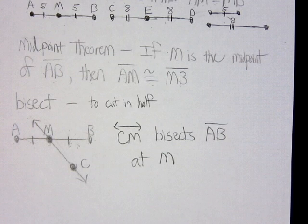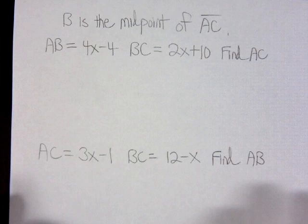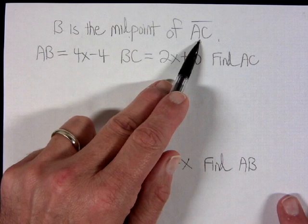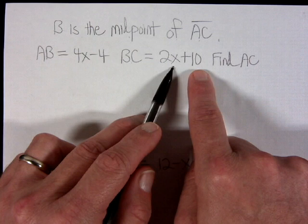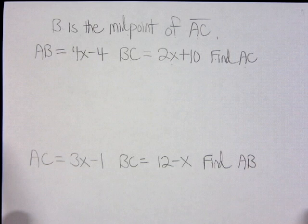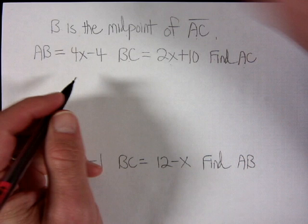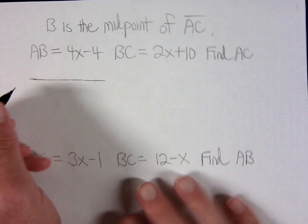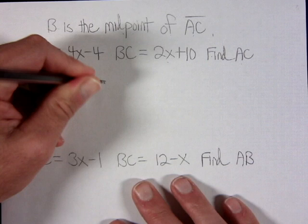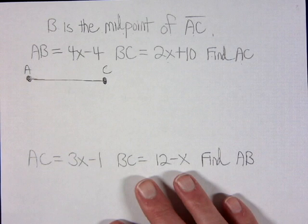Now let's use the midpoint theorem to answer some questions. The directions say B is the midpoint of segment AC, and they've given us two segments in terms of x, asking us to find the measure of AC. Since there's no drawing provided, we'll create one. We need to draw segment AC first, then place B right in the middle of that segment as the midpoint.